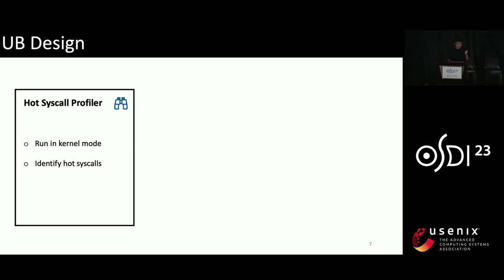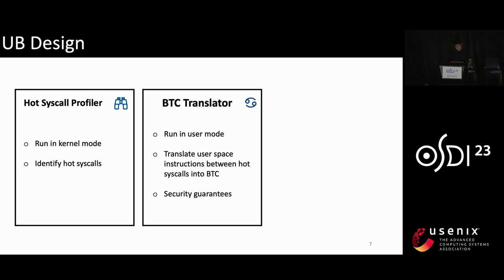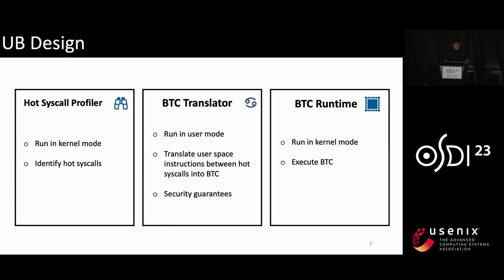We design UB into three components. The first is the Hot Syscall Profiler, which runs in kernel mode and identifies hot syscalls — syscalls that are closely followed by another syscall. The second is the BTC Translator, which runs in user mode and translates user space code between two syscalls (called the fast path) into Binary Translation Cache (BTC). It also guarantees security. Finally, BTC Runtime executes the BTC in kernel mode.